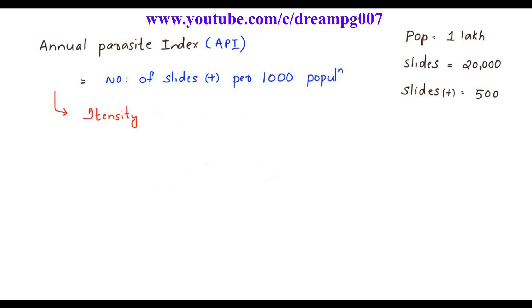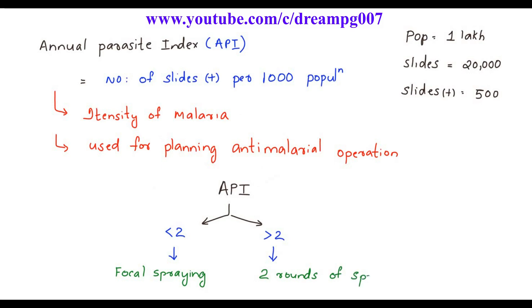It represents the intensity of malaria. Annual Parasite Index is used for planning anti-malarial operations. If API is less than two, only focal spraying is needed. If the Annual Parasite Index is greater than two, then two rounds of spray to get rid of mosquito is needed in the community.